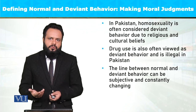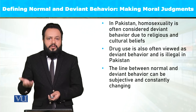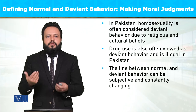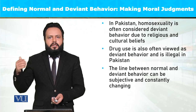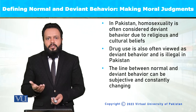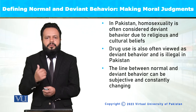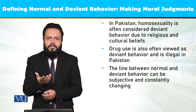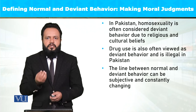آج ہم early marriage کو ایک abnormality consider کرتے ہیں، جبکہ آج سے 100 سال پہلے اسے ایک desirable behavior سمجھا جاتا تھا۔ اسی طرح co-education system کو آج کے معاشرے میں perfectly normal سمجھا جاتا ہے، جبکہ subcontinent کی traditional culture میں یہ ایک deviant behavior تھا۔ Normality ہمیشہ moral judgments کے through define ہوتی ہے، اور moral judgments کا سب سے اہم derivative source religion ہوتا ہے۔